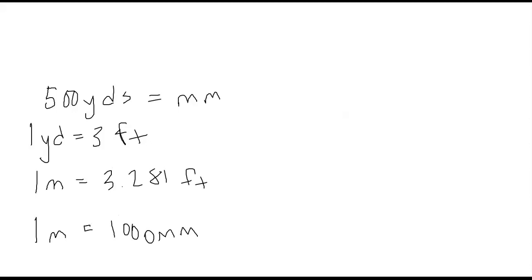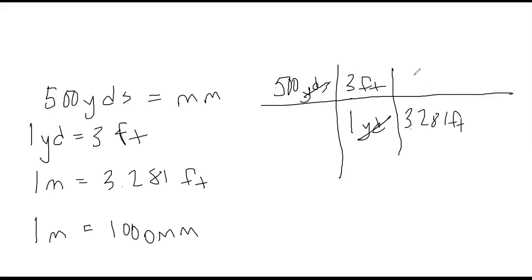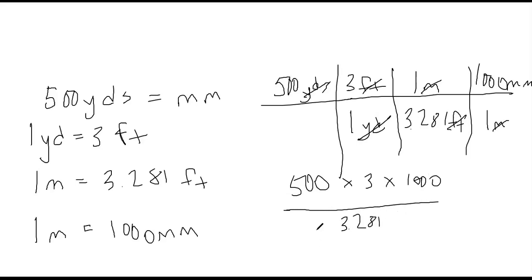Let's see how we did. So we start with 500 yards and we're going to change that into millimeters. One yard, three feet, yards cancel. We have 3.281 feet is one meter, and then one meter is a thousand millimeters. So feet cancel, meters cancel. So we have 500 times three times a thousand over 3.281.